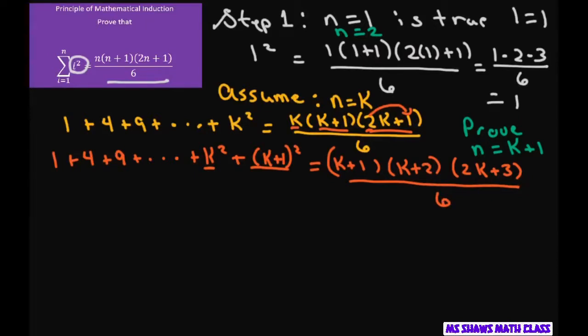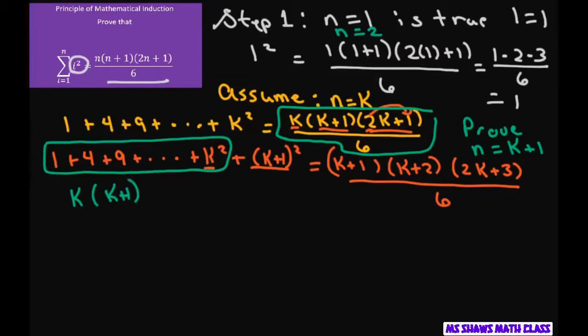All right. Now that you did that, what we want to do is prove this. And we already know what this equals. This equals this from our assumption line. So that's going to be k times k plus 1 times 2k plus 1 divided by 6. And then you're going to add this part. K plus 1 squared divided by 6. Well, we don't have any division. So basically to have the common denominator, we're going to put a 6 here and a 6 here. Now all we have to do is to simplify this numerator and make it look like this right hand side here.